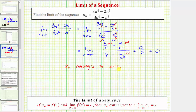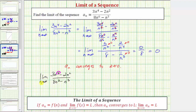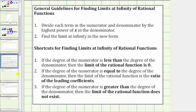This tells us the sequence a sub n converges to zero, meaning that as we generate more and more terms using the formula a sub n, the values will approach zero. Before we look at this graphically, let's also determine this original limit using the shortcut. The shortcut involves determining the degree of the numerator and denominator. The degree of the numerator is four and the degree of the denominator is six, so the degree of the numerator is less than the degree of the denominator, and therefore the limit of the rational function is zero.